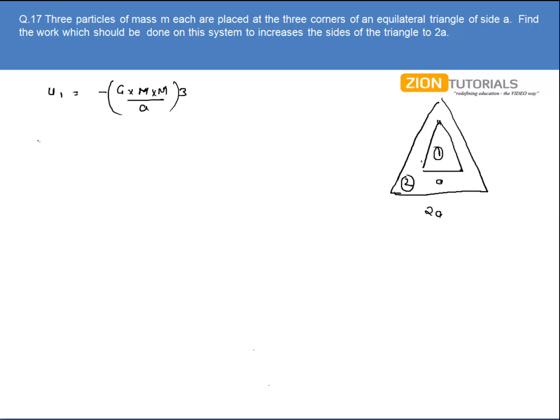To calculate the work done, I can calculate the final potential energy, which is given by minus G times M times M divided by 2A, times three again. So this is the final potential energy.